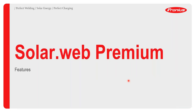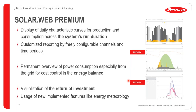Now for the SolarWeb Premium features. The display of the characteristic curve for production and consumption across the system's entire run duration is available — unlike the free version which is limited to the last three days. The premium version covers the full system run duration.